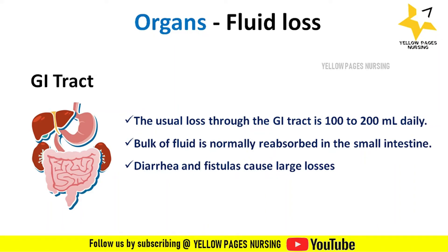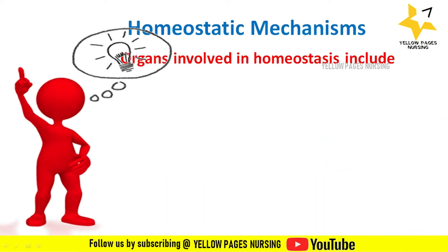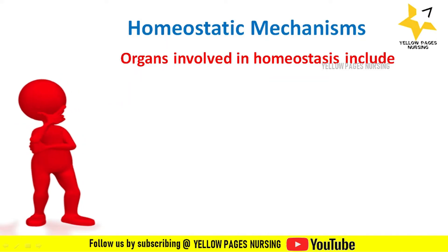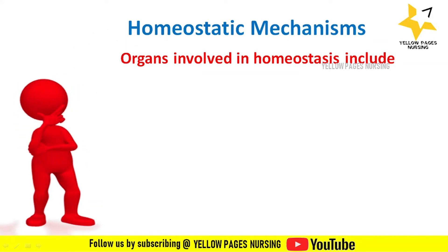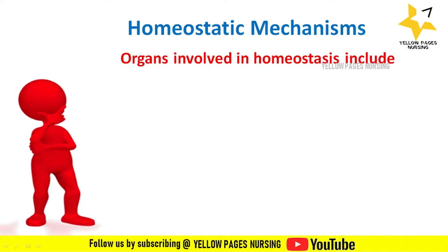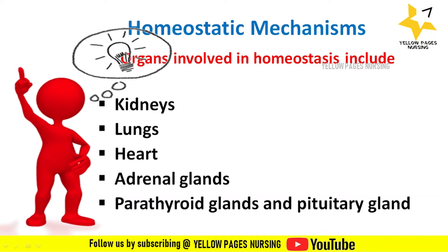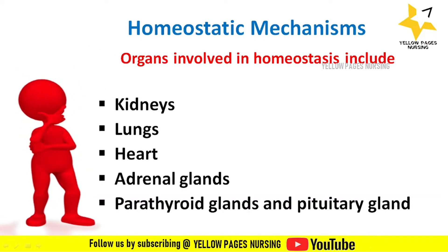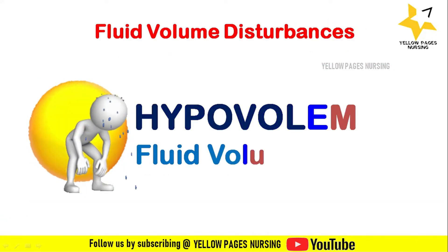The body is equipped with remarkable homeostatic mechanisms to keep the composition and volume of body fluid within normal limits. Homeostatic mechanisms are adjustments of physiological systems within the body. Organs involved in homeostasis include the kidneys, lungs, heart, adrenal glands, parathyroid glands, and pituitary gland.